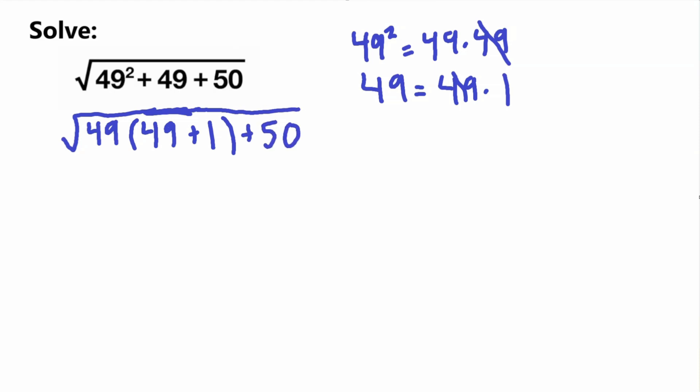So now this already looks easier to solve. So 49 plus 1 inside the parentheses, we can simplify that to 50. So we have 49 times 50 plus 50.